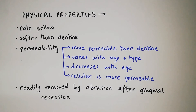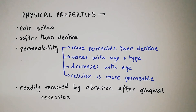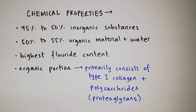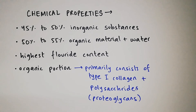Regarding the physical properties: cementum is pale yellow in color and softer than dentine. It is more permeable than dentine, and its permeability varies with age and type — it decreases with age, and cellular cementum is more permeable than acellular cementum. It is readily removed by abrasion after gingival recession. Cementum is composed of 45–50% inorganic substances and 50–55% organic material plus water. It has the highest fluoride content of all mineralized tissues, and its organic portion consists primarily of type 1 collagen and proteoglycans.